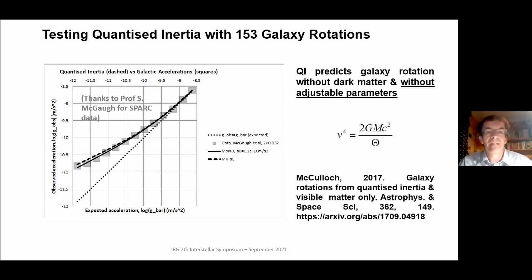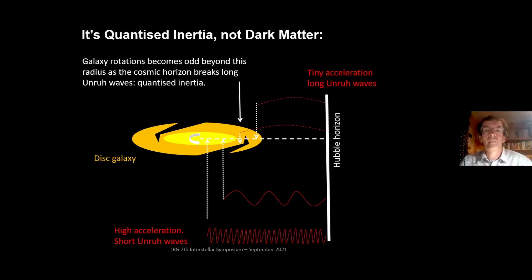I can show this using the data. If you look at the expected acceleration of galaxies shown here along the x-axis and the observed acceleration on the y-axis, the data, which I got from Professor Stacy McGaugh, is shown by the gray squares, and the theory goes right through the dashed line here. So it works very well and it works very simply. The equation is shown on the right: the velocity to the power four is equal to 2GMc² divided by the Hubble diameter. I showed that in a paper in 2007. So the theory predicts galaxy rotation very simply and without the need for dark matter.